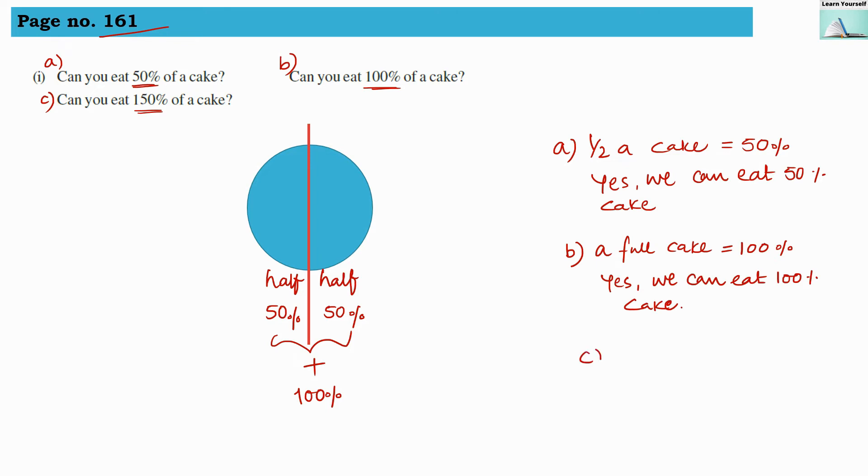Now question C. It says that can you eat 150% of cake? 150% means this is 100%. If we have another cake and from that we are taking a half, and that 50% we are adding into this, then it is going to be 150%. But we have here only one cake.